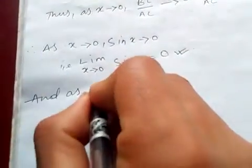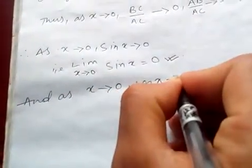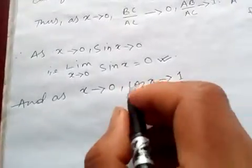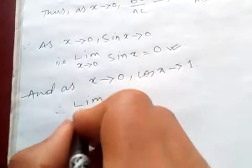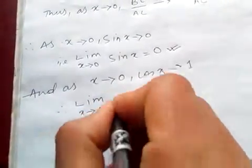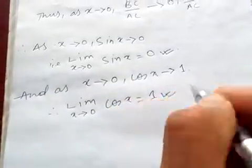As x tends to 0, cosine of x tends to 1, because cosine of 0 is 1. Therefore, limit x tends to 0, cosine of x is 1. This is the proof.